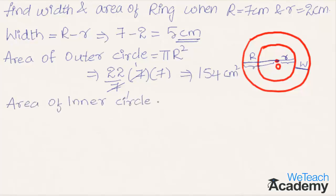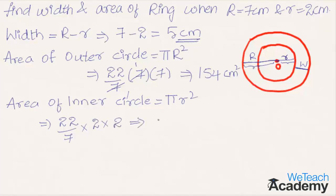The area of the inner circle is given by π·r², where r is the radius of the inner circle, that is 2 cm. Substituting the value of r, we get (22/7) × 2 × 2. Multiplying the terms in the numerator gives 88/7, which is approximately equal to 12.5714 cm².